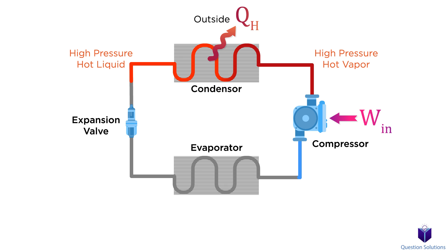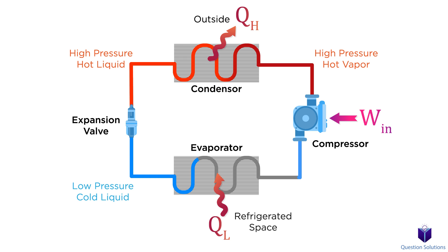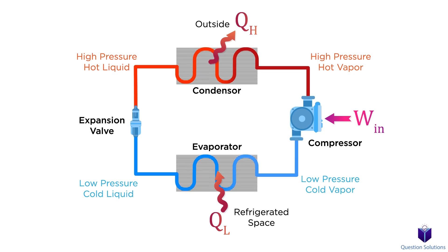It then enters the expansion valve and there is a large drop in pressure and temperature. Now it enters the evaporator where the refrigerant evaporates by absorbing the heat in the refrigerated space. In simple terms, heat is absorbed which changes the refrigerant from a liquid to a vapor. Because heat is absorbed by the refrigerant, the refrigerated area gets colder. It will then go back into the compressor as a vapor and the cycle repeats.